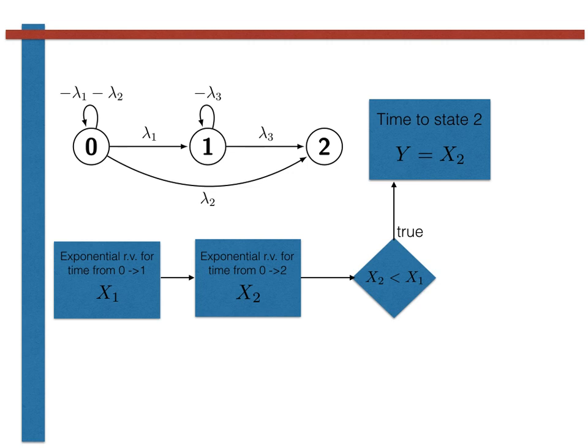If, however, X2 is greater than X1, then the chain has transitioned to state 1. We thus have to generate a third random variable, X3, that again comes from an exponential distribution with parameter lambda 3.